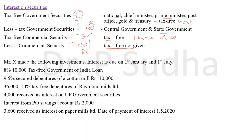Let us see a question. Mr. X made the following investments; interest is due on 1st January and 1st July. First: 8%, 10,000 tax-free Government of India loan — the words 'tax-free government' are given, so it is a tax-free government security; write it as exempted in the amount column. Next: 9.5% secured debentures of Cotton Mills — Cotton Mills is a company name and the word 'tax-free' is not present, so this is a less-taxed commercial security. It is taxable but since 'net' or 'received' is not given, there is no grossing up. Calculate: 10,000 into 9.5% = 950 rupees; write it in the amount column.